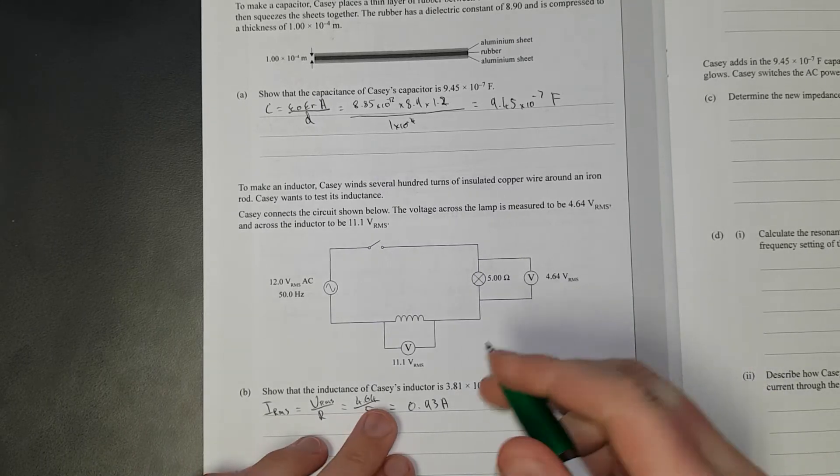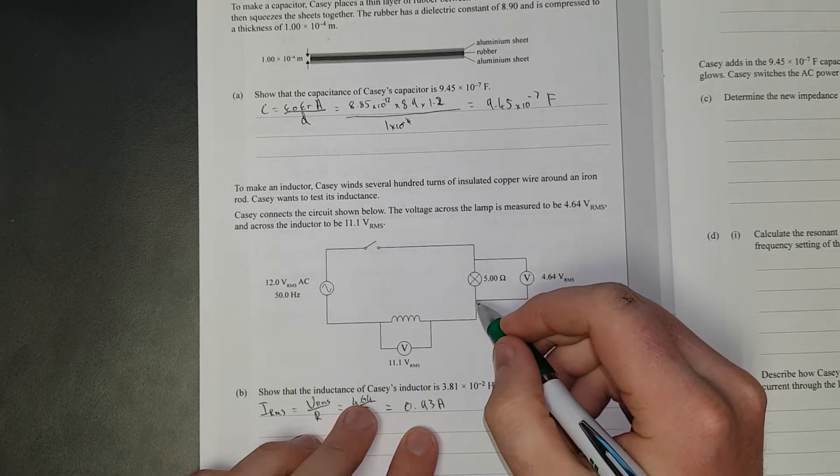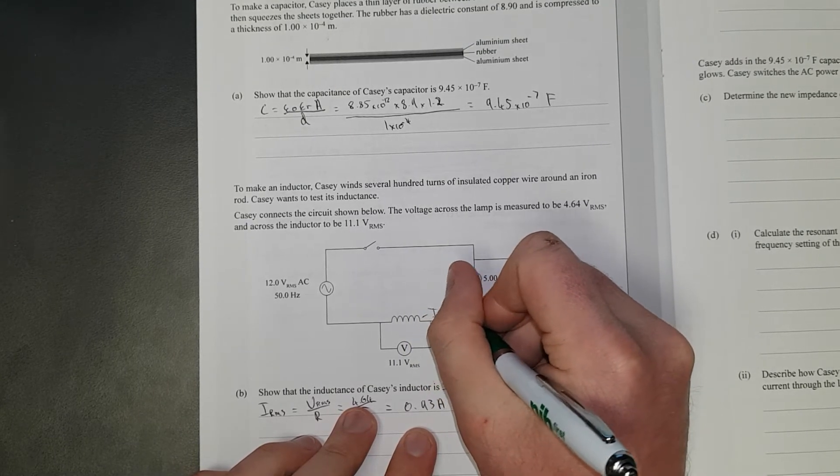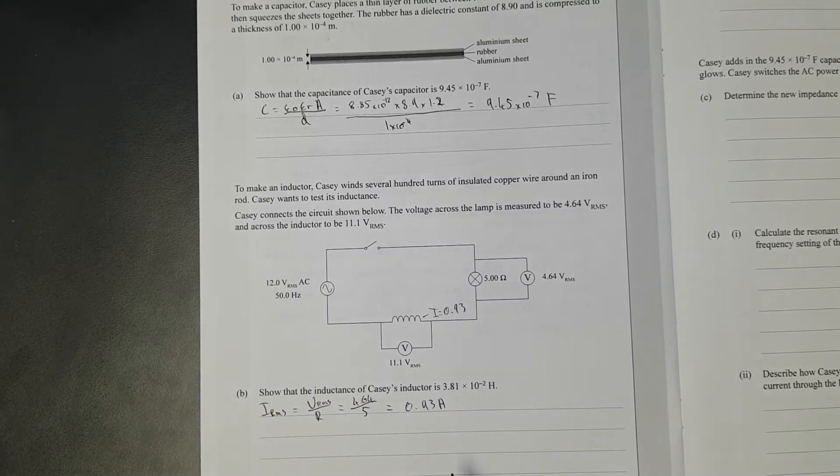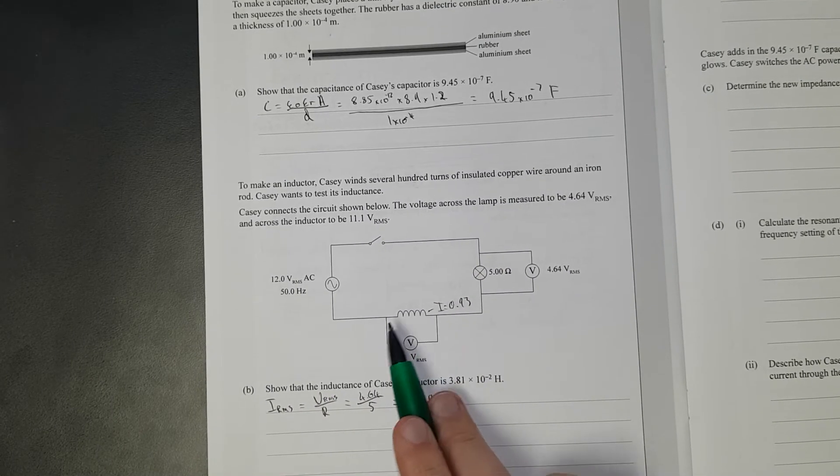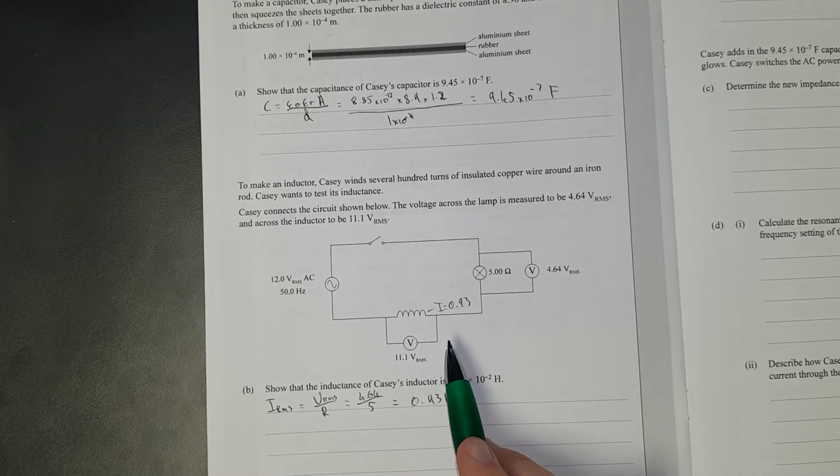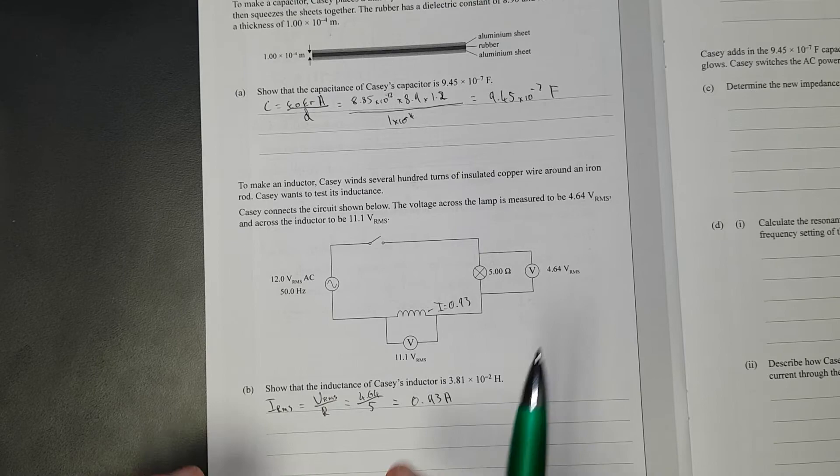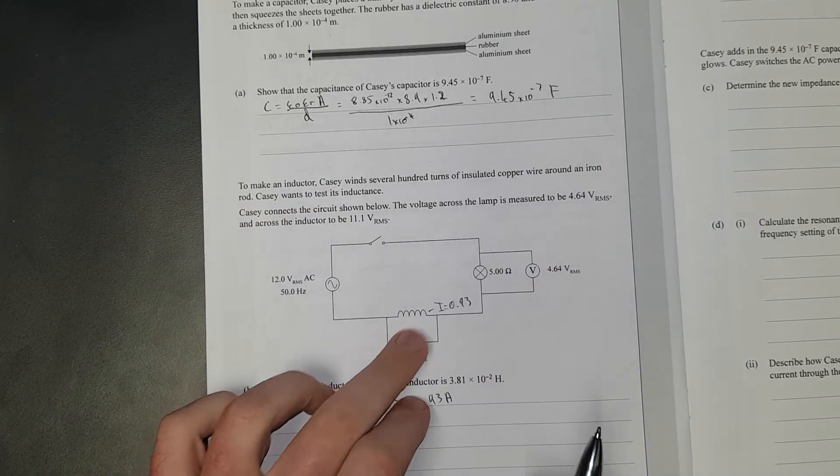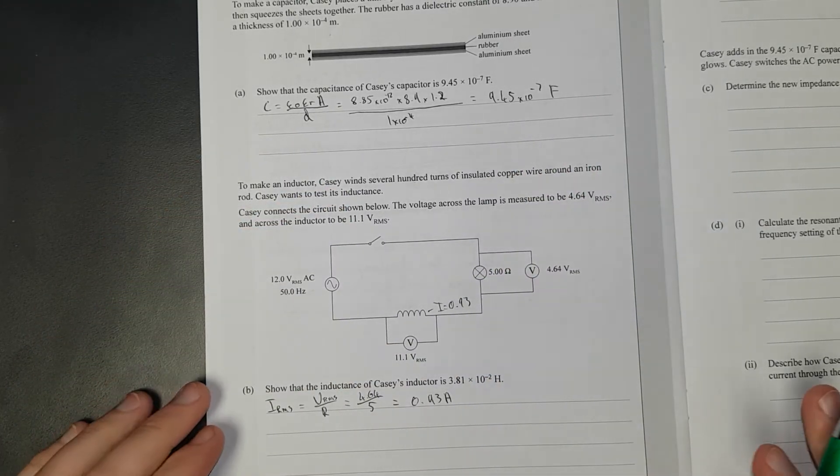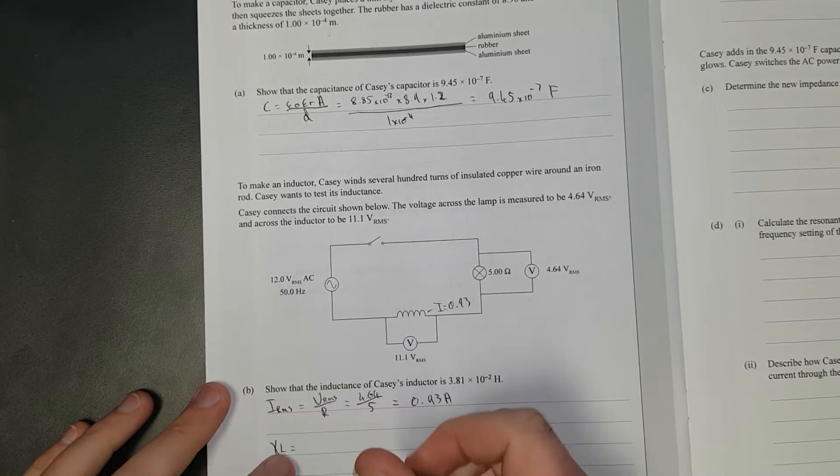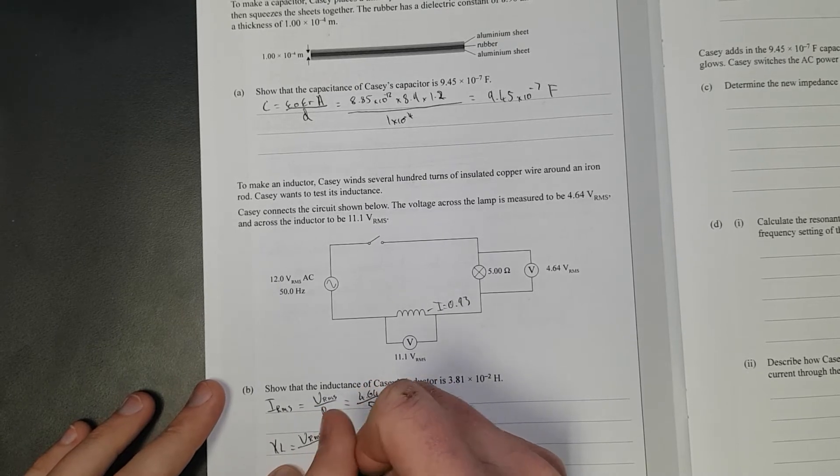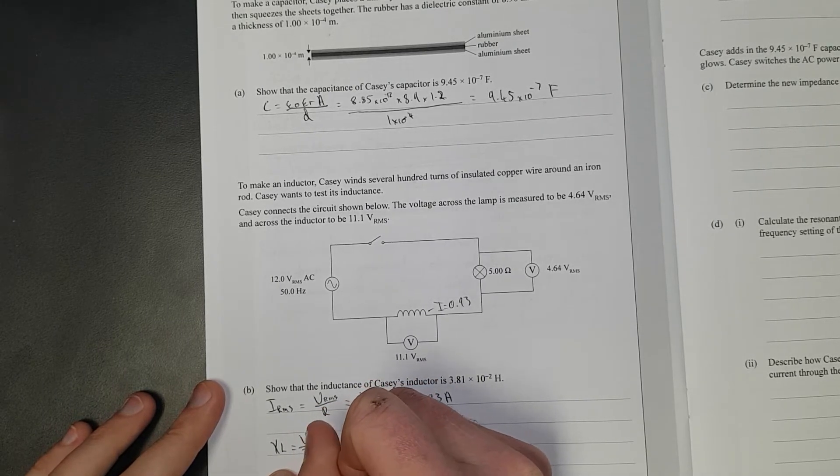So 0.93 amps goes through here. How is that going to help us? We will find the reactance of this inductor. It's kind of like a fancy resistance. Well the impedance is a fancy resistance, but the reactance is essentially the resistance of that inductor. It's actually fairly simple to calculate. XL is equal to V RMS divided by I RMS.